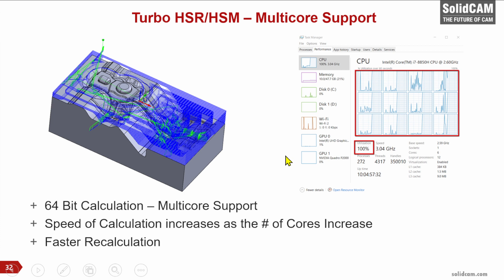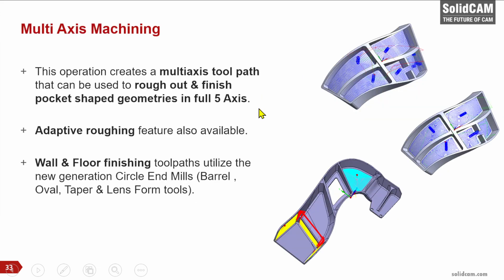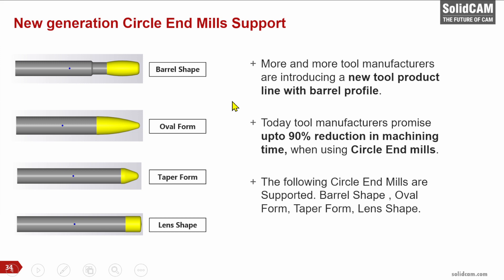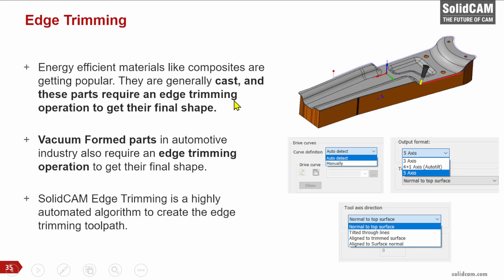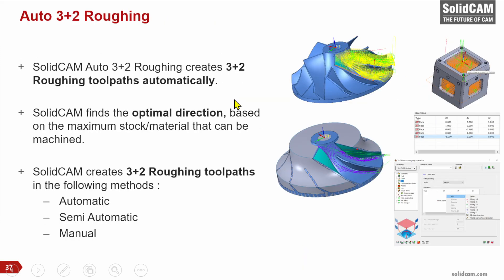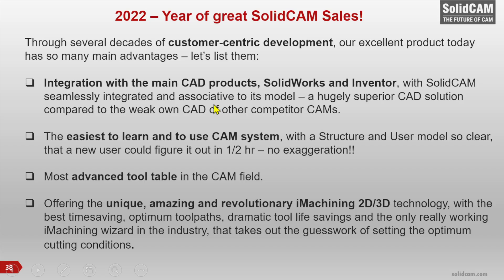A few more things we did in version 2021: we have Turbo HSR/HSM with multi-core support for very fast calculation. We support multi-axis machining, circle end mills, edge trimming, edge breaking — quite a unique functionality — and also auto 3+2 machining.